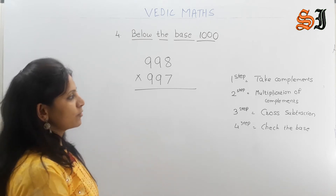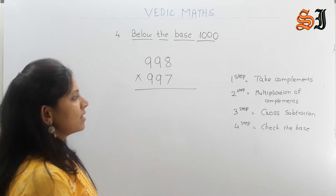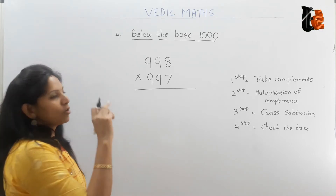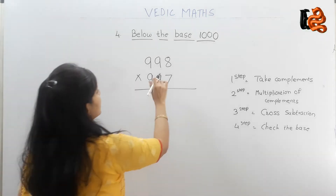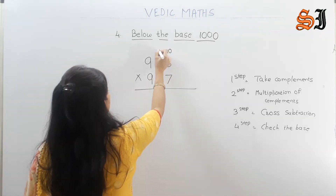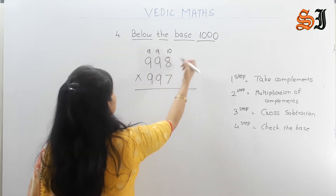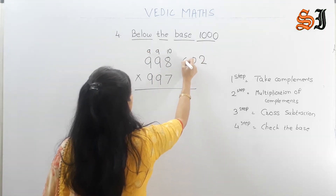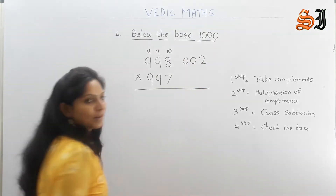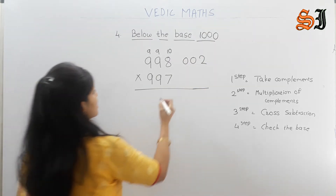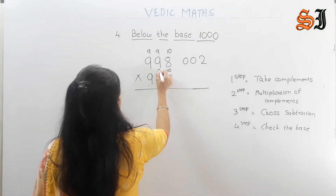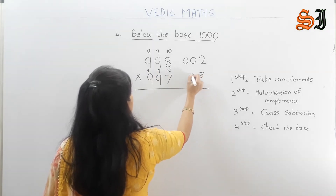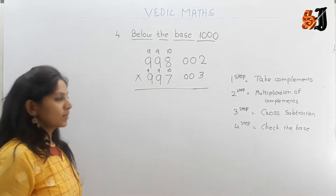Next step: follow the steps for 1000. First step — take the complements. For 998: complement is 10, 9, 9. The answer is 2, 0, 0. For 997: complement is 10, 9, 9. The answer is 3, 0, 0.